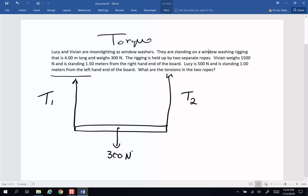One of my washers is Viv and she is 1.5, let's give her a hat and a little hair here. She is 1.5 meters from this end. Lucy is a little thinner and she is going to be over here. She is 1 meter from this end and weighs 500 newtons, while Viv over here weighs 1,500 newtons. The entire board is 4 meters wide from one side to the other. And the question is what are the tensions in the two ropes?